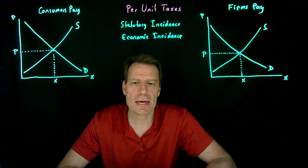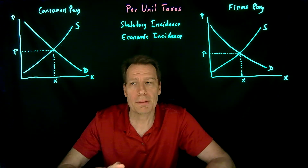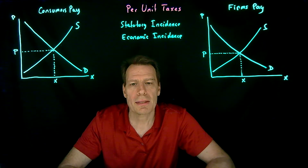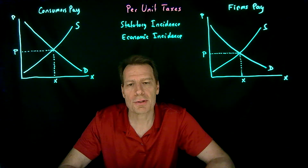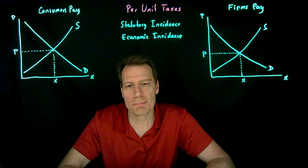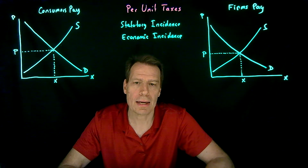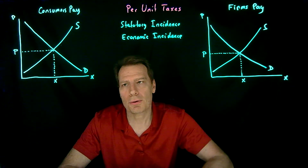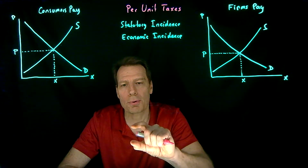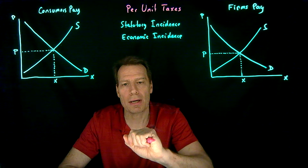So let's look at these two cases. Suppose the law says that consumers have to pay the tax. Then the people in our graph who care are the demanders — they're the consumers. They now know that they have to pay this tax on top of the price, so they're not going to be willing to pay as high a price because they know in addition they're going to have to pay this per-unit tax. So that's going to shift down the demand curve by exactly the per-unit tax.